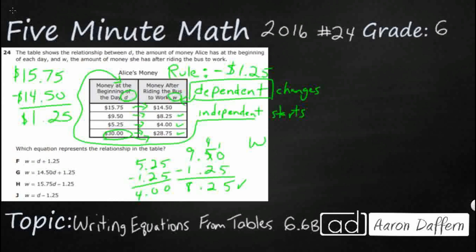So our dependent variable is, well, it's based on what happens with our independent variable. So that's D. And what do we do with that independent variable? Well, we take away 125. That's our rule.